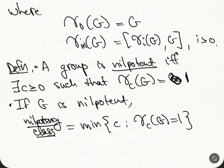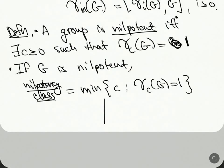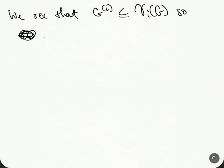How to think about these things? We see that G^(i) is contained in γ_i(G), so this implies that G nilpotent implies G is solvable, because that's what the condition for solvability was.